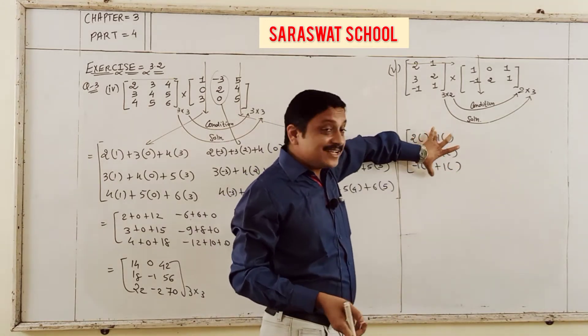B matrix: 3, minus 1, 2; 4, 2, 5; and 2, 0, 3. And last, students, the C matrix is also given: 4, 1, 2; 0, 3, 2; and 1, minus 2, 3. So first of all I will explain about finding A plus B only, then after that B minus C, and after that start the verification.